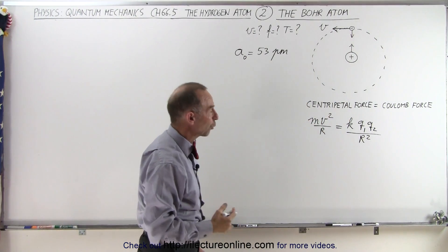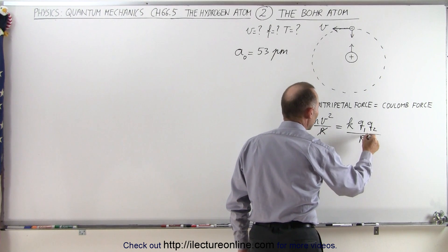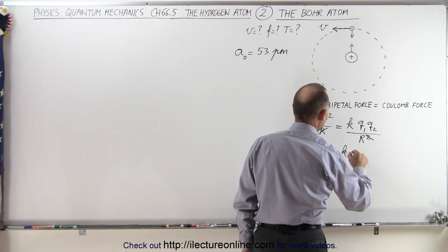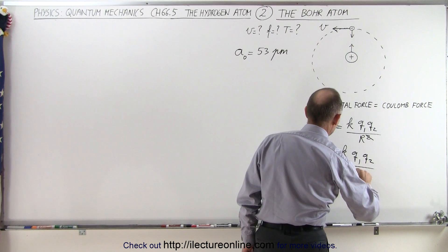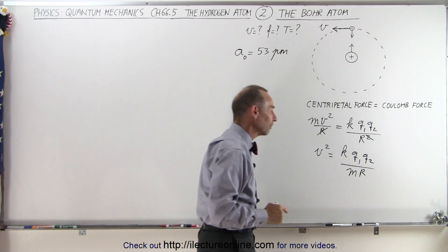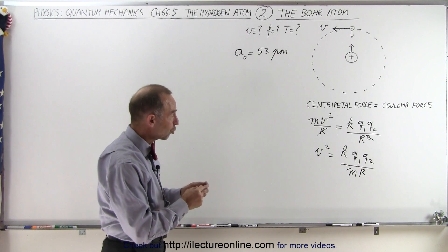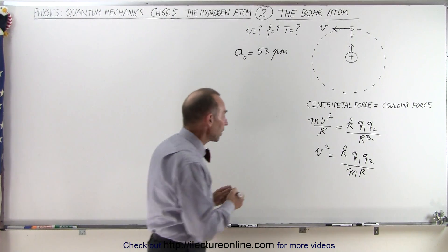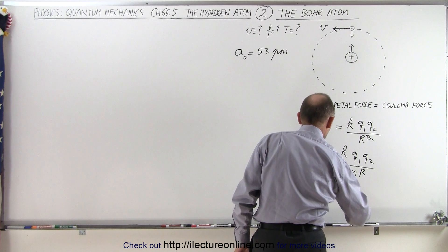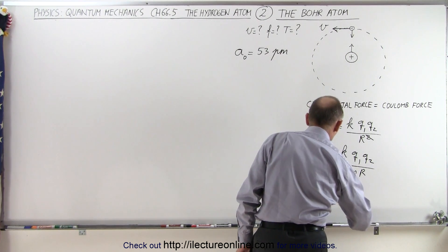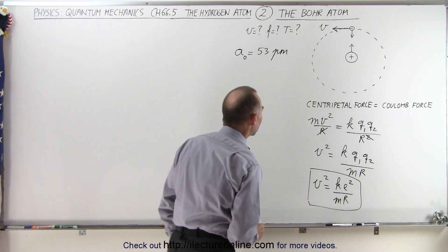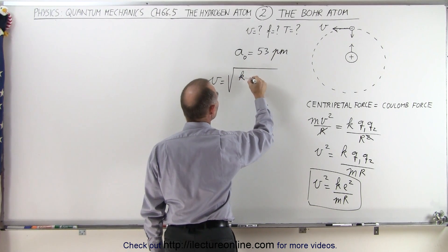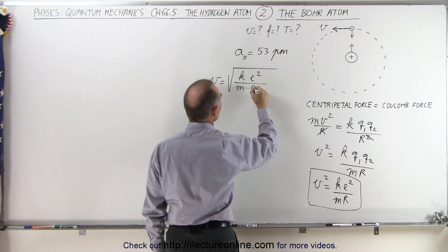Right away we can cancel this r with one of those, and now we're going to solve this for the velocity, so we get velocity squared is equal to k, q1, q2 divided by m times r — the mass of the electron times the radius of its orbit. And q1 and q2 are the charge of the electron and the proton, which are basically equal to one another, so we can simply call it the electron charge squared. We can write that v squared is equal to k times e squared divided by m times r. To find the velocity we simply take the square root of both sides, so v is equal to the square root of k times e squared divided by the mass times the radius.